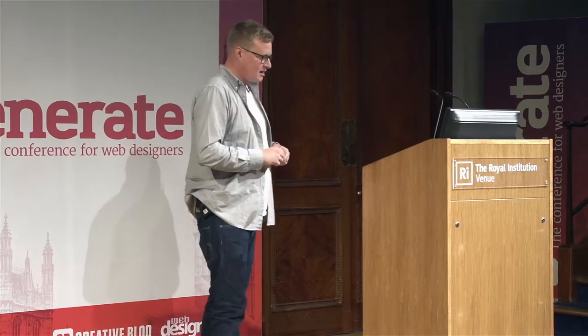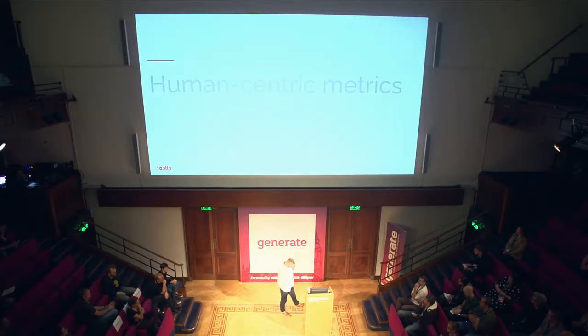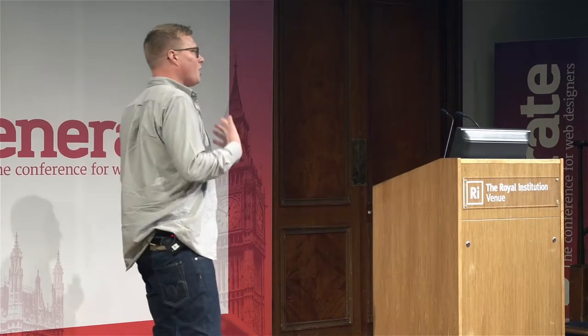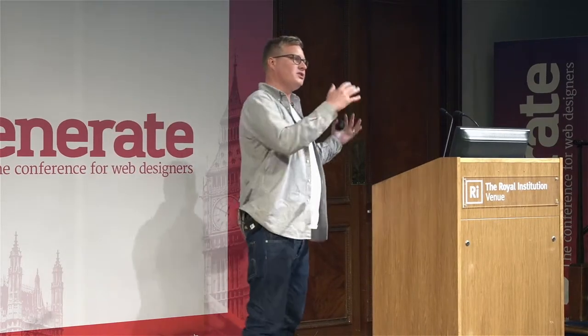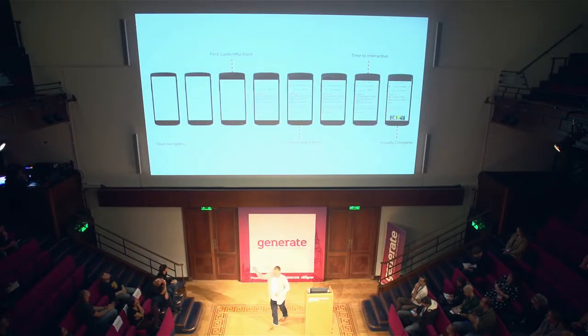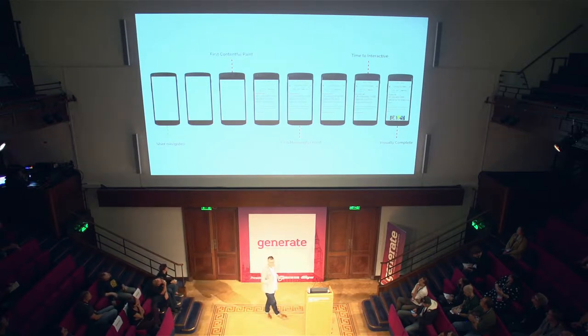When you start to focus on user-centric metrics like this, any optimizations you do will ultimately just increase the user experience for your users — not just optimizing the stack to knock out a couple of milliseconds. We're seeing a rise of what we're starting to call human-centric metrics in the performance industry. There are multiple stages throughout the experience: first contentful paint, first meaningful paint, time to interaction, and visually complete. There is no single golden metric.